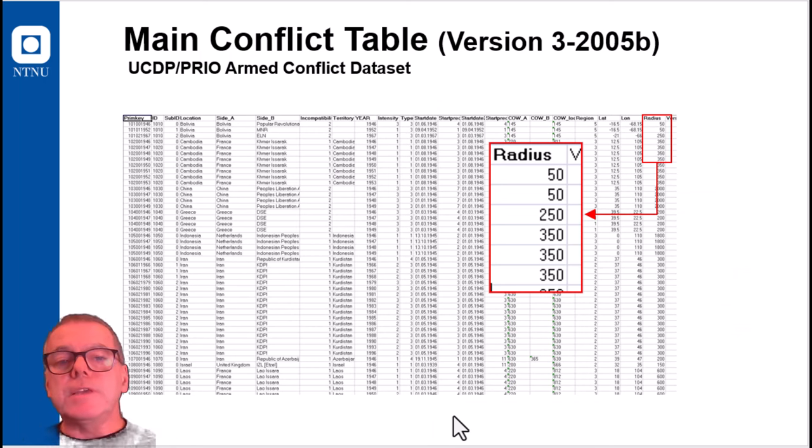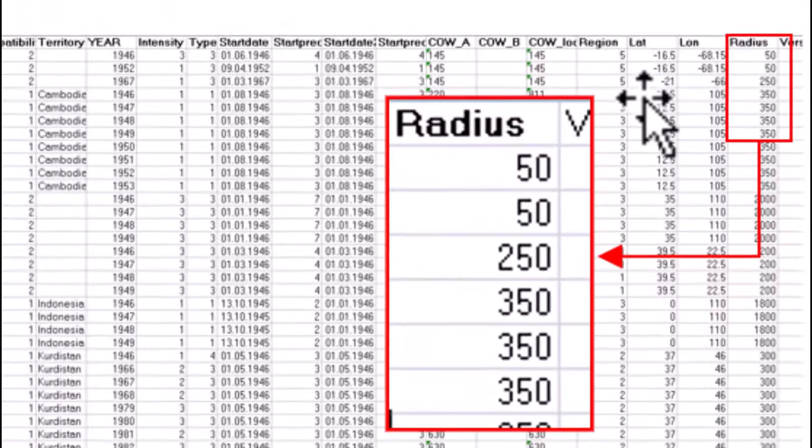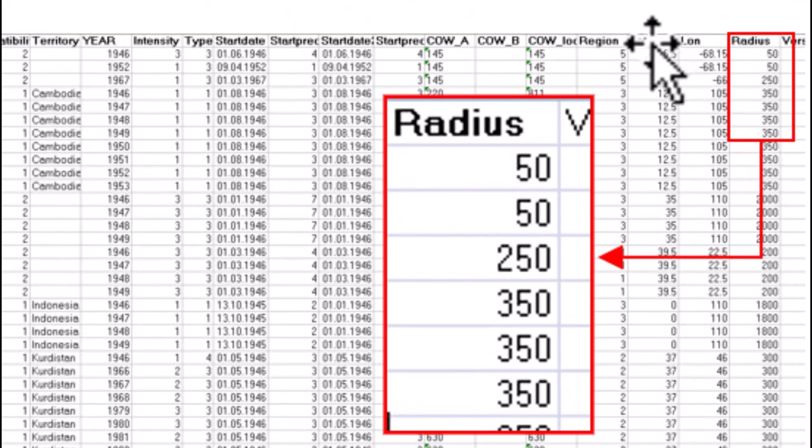One example of this is what we did many years ago on conflicts around the world, armed conflicts. We had a database on all the conflicts, and we geocoded them with the latitude and longitude, and we also gave a radius value representing the geographical extensions of the armed conflict.